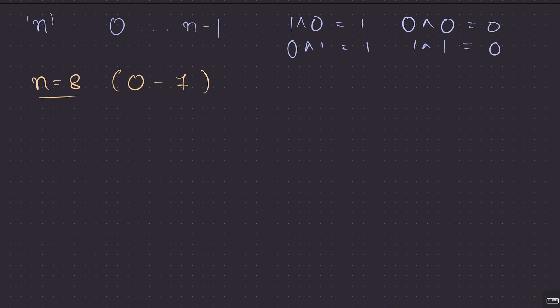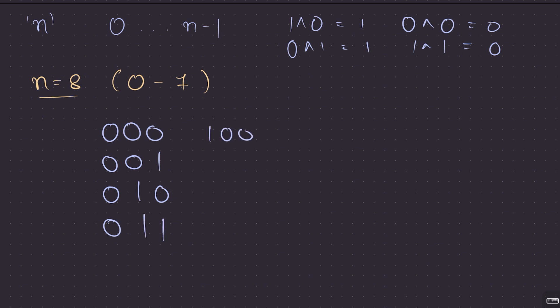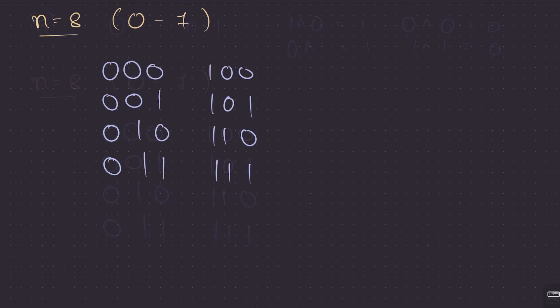For n equals 8, let me write the binary of all numbers in the range 0 to 7: 0, 1, 2, 3, 4, 5, 6, and 7.